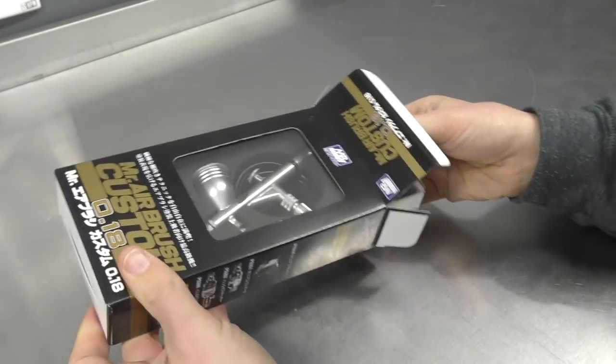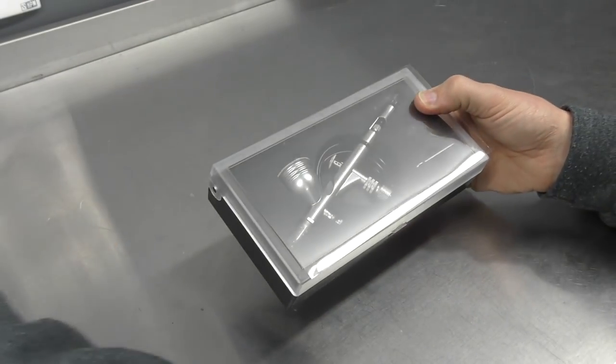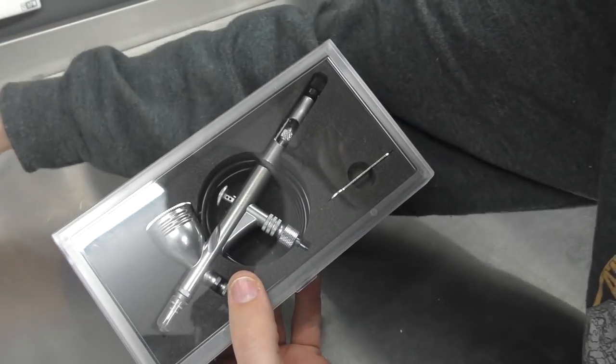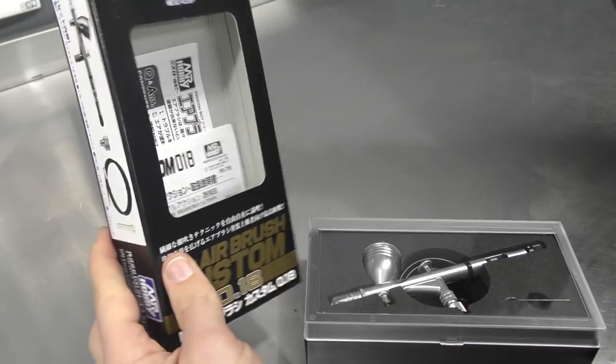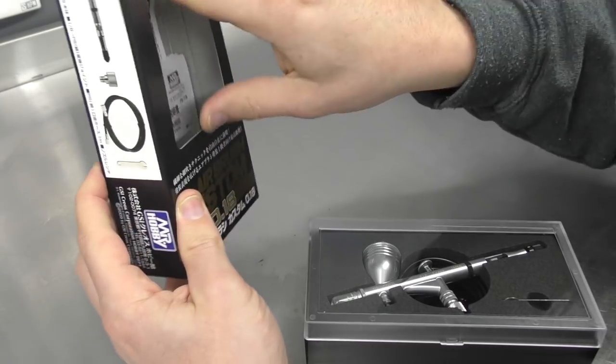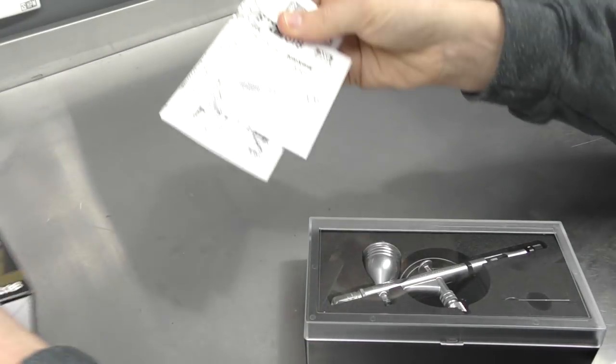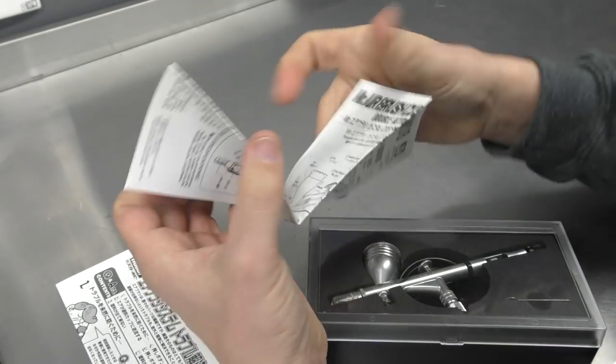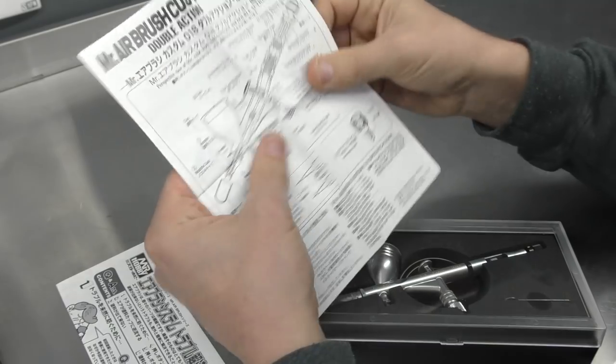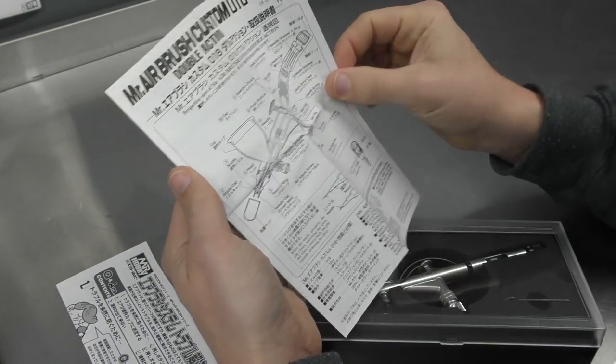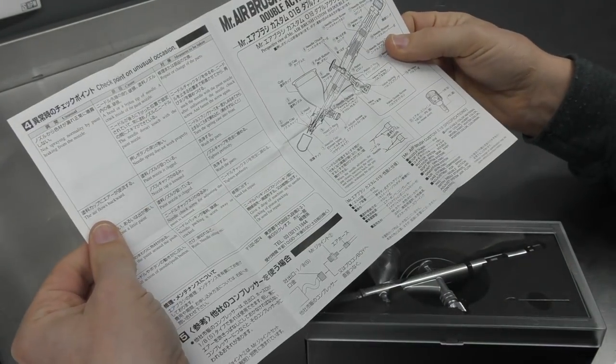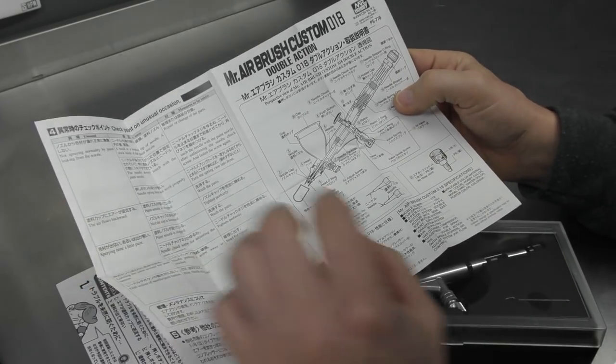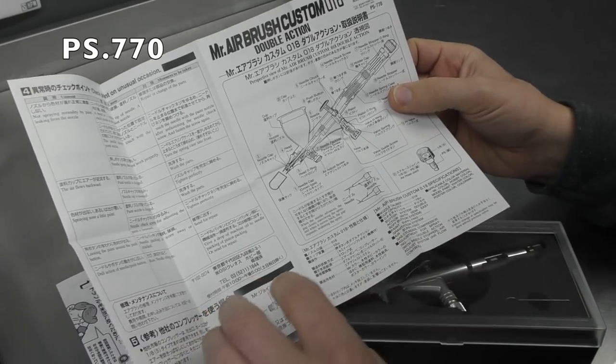Got the airbrush pictured on the back again. So what I can understand from the back here it's a 0.18 mil. It's got a 10cc cup, so 10 mil of capacity in the cup there, and just some other little bits and pieces and features. So let's get her open. This airbrush is made in Japan so I'm very excited to try it out. As you know things made in Japan are usually really good.